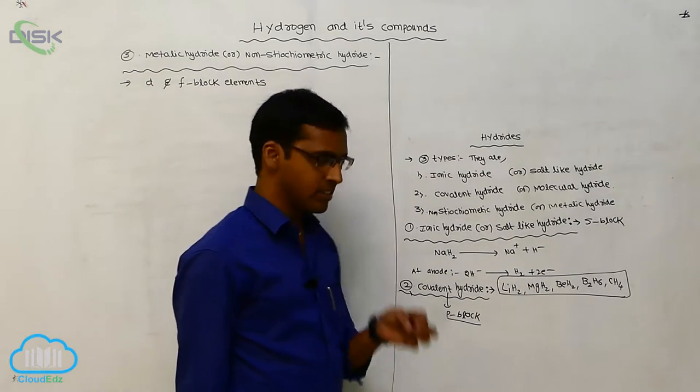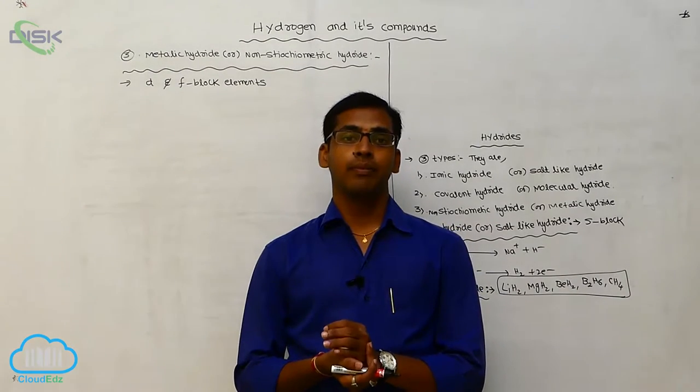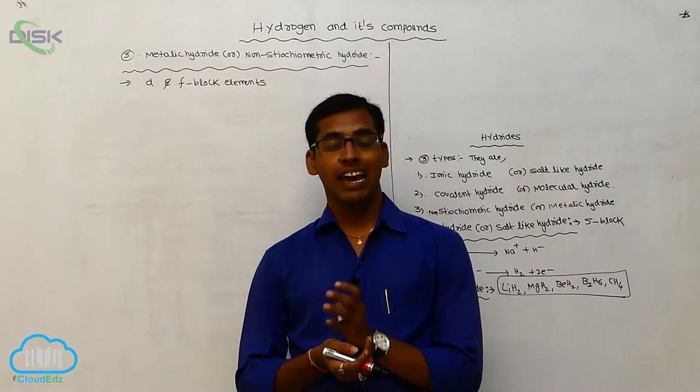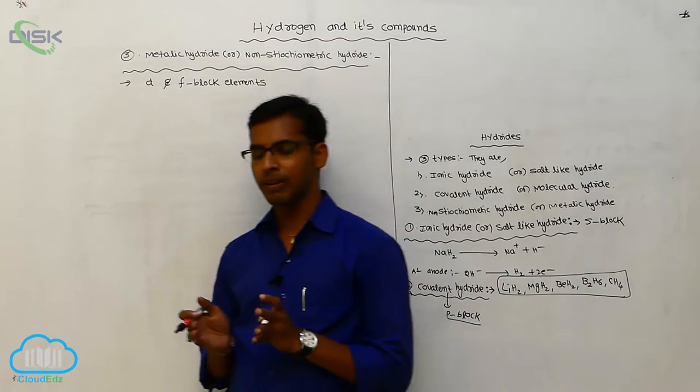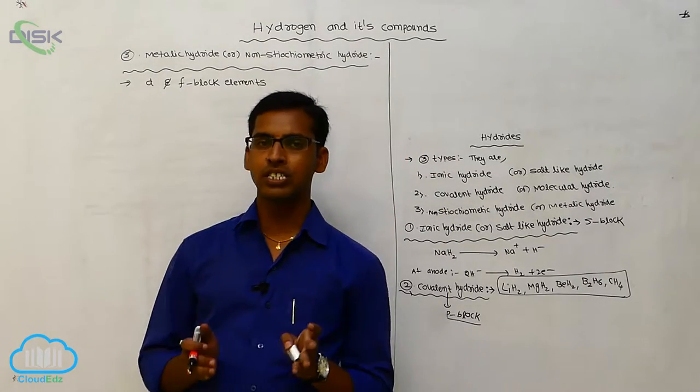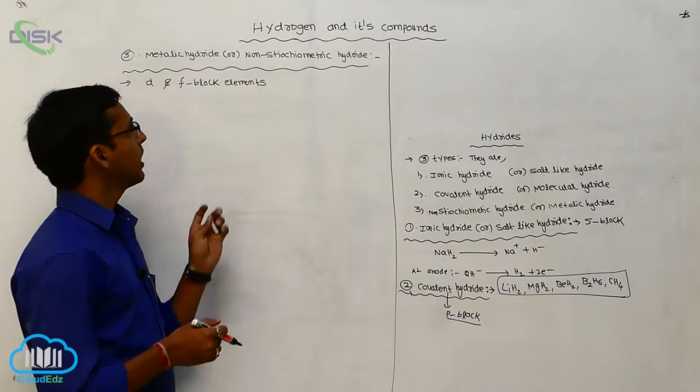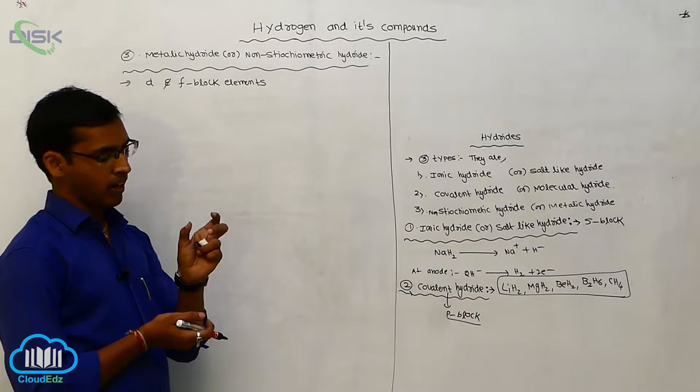The metallic hydride or non-stoichiometric hydride examples are lanthanum hydride, ytterbium hydride, titanium hydride or scandium hydride. D and F-block elements are involving in the participation of metallic hydrides. Here, metallic bond is present between the metal and hydrogen.